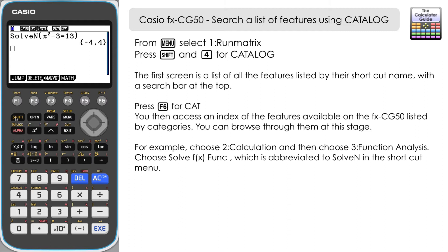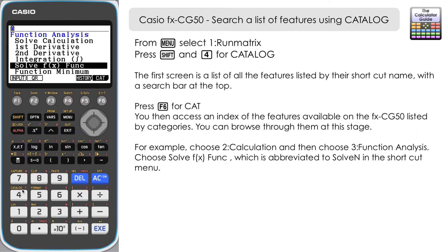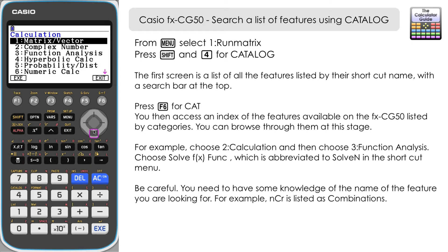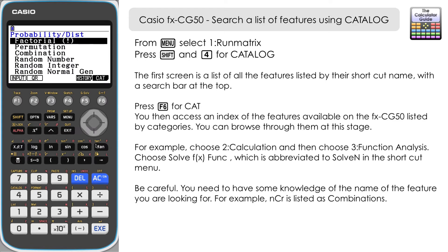Let's return to the catalogue — Shift and 4. Let's press F6 to go back to the categories and go to Calculation again, then go down to Probability Distribution. I'll show you where you need to be slightly careful. Here we're going to choose Combination. When I first searched for this I was looking for NCR, but this feature is just listed as Combination, so you do have to have some knowledge about the way in which what you're looking for is labeled or named in the catalogue.